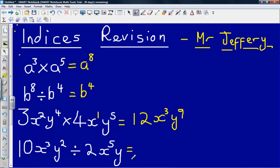Last one, we've got ten x cubed y to the power of two divided by two x to the power of five y. Again we don't have a power here so I'm just going to add that one. So y to the power of one there. And then again treating each bit individually. I'll start with ten divided by two which gives me five.